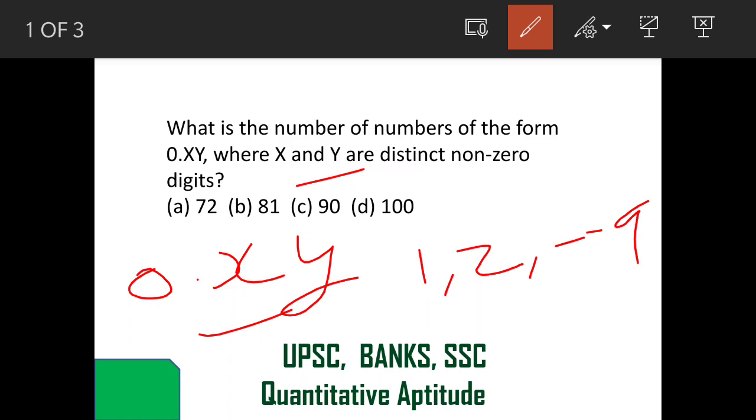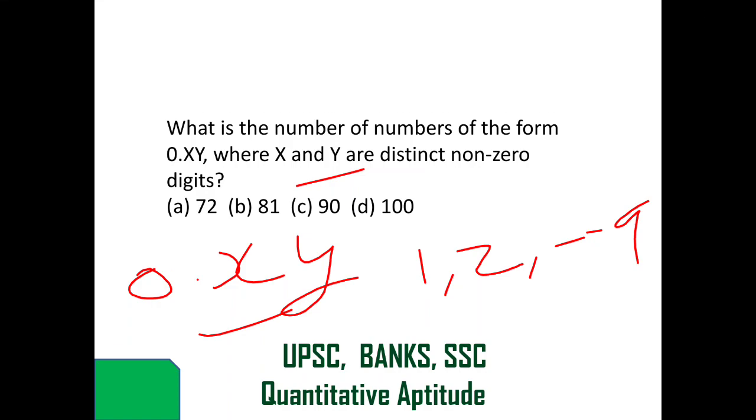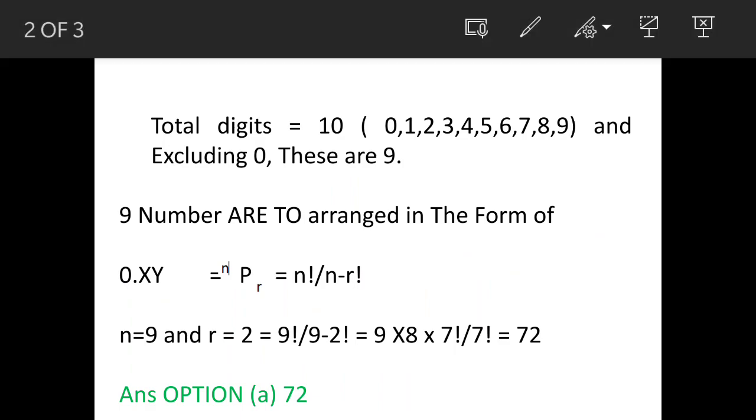So this is a question of permutation and we will see the solution. Now total digits are 10 when we count 0. And when we exclude 0, these are 9. So as per question we have to consider 9 digits excluding 0.